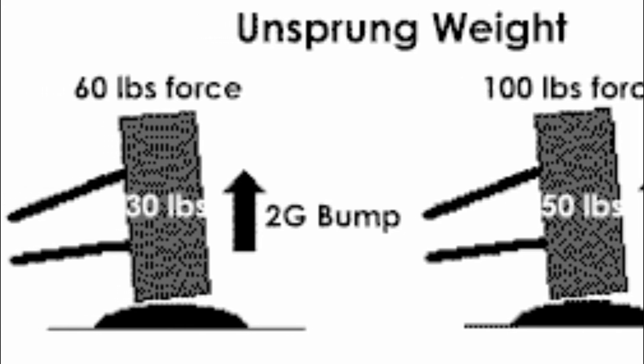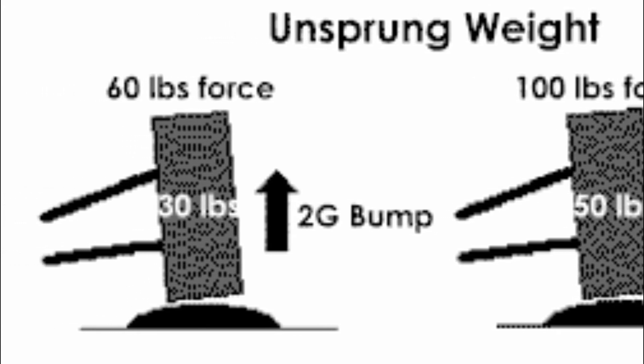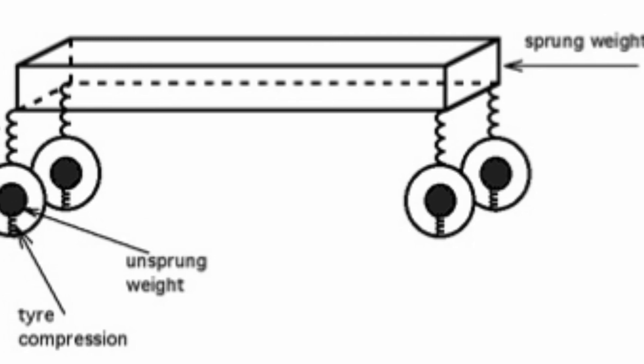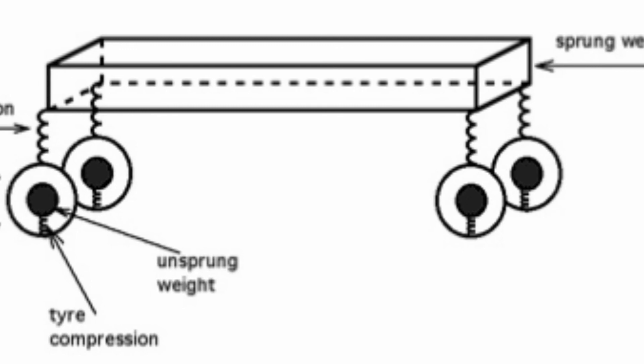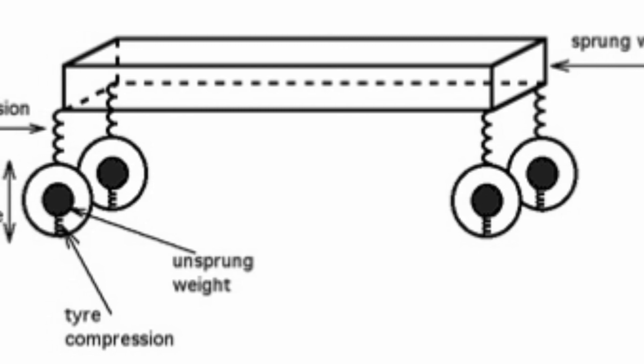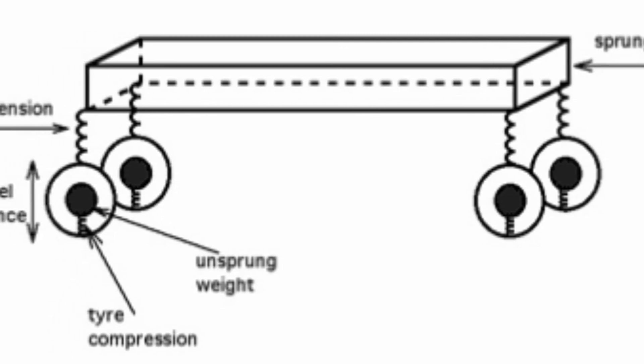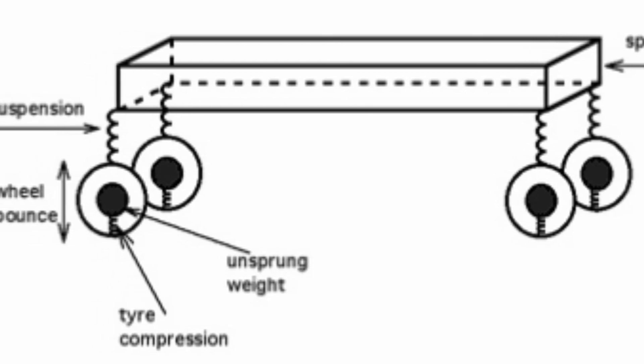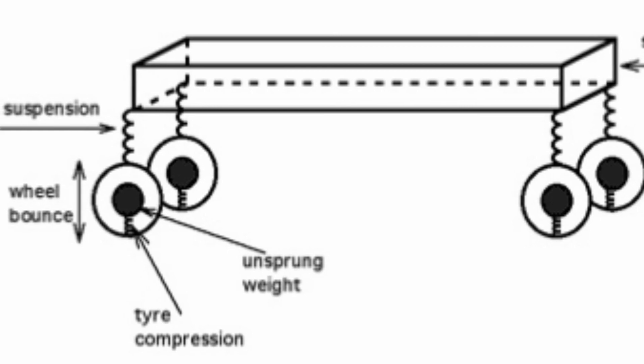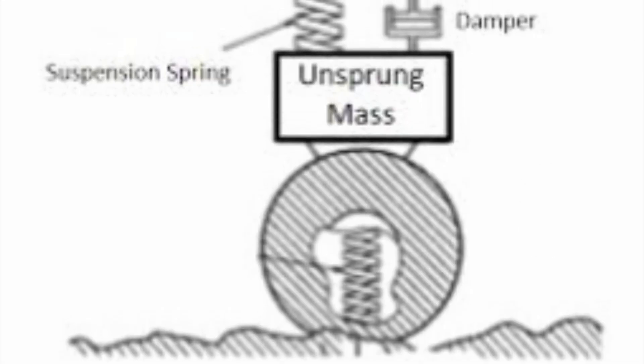Beam axle suspensions, in which wheels on opposite sides are connected as a rigid unit, generally have greater unsprung mass than independent suspension systems, in which the wheels are suspended and allowed to move separately. Heavy components such as the differential can be made part of the sprung mass by connecting them directly to the body.